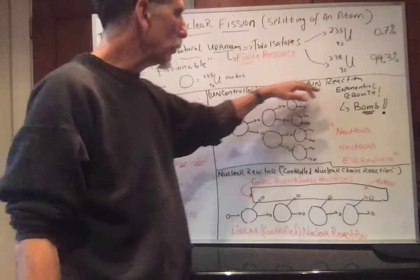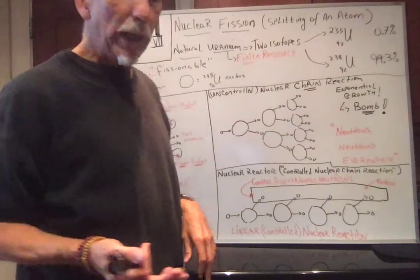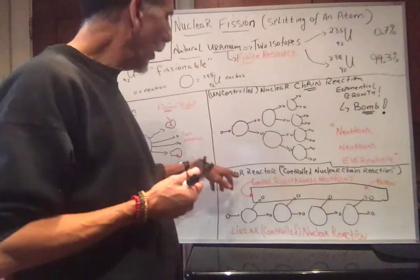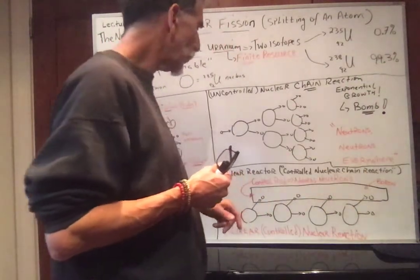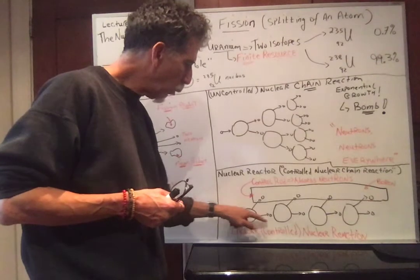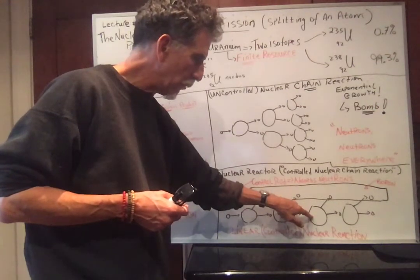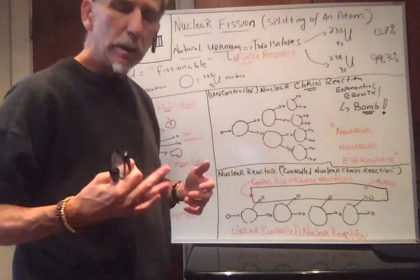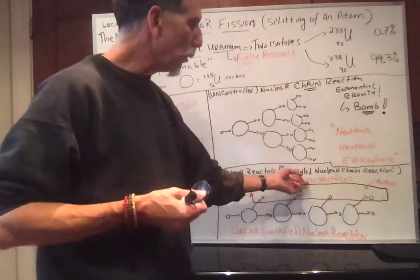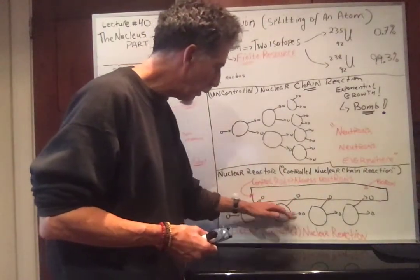This is an uncontrolled chain reaction that grows exponentially. What about a nuclear reactor? The idea is very simple: in a nuclear reactor, we want a controlled nuclear chain reaction. A neutron comes in, hits a uranium-235 nucleus, two neutrons come out. One neutron is allowed to hit another uranium. The second neutron is absorbed by control rods, typically made of an element such as boron. Now we have a linear controlled nuclear reaction: one, one, one, one. It's controlled.